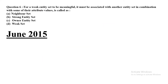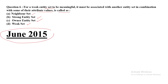This is question number 6. For a weak entity set to be meaningful, it must be associated with another entity set in combination with some of their attribute values. The options are: A) Never set, B) Strong entity set, C) Owner entity set, D) Weak set. This question was asked in June 2015.